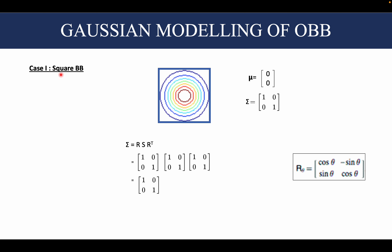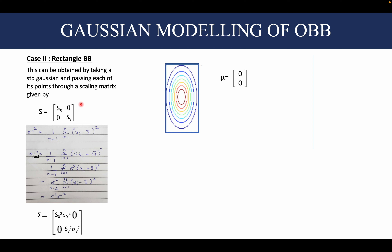Coming to the first case — that of a square bounding box. We have a standard 2D Gaussian with mean mu at the origin and the covariance matrix as an identity matrix, and our square bounding box encloses this standard 2D Gaussian. The covariance matrix can be broken down into R S R-transpose, which would be nothing but identity matrices.